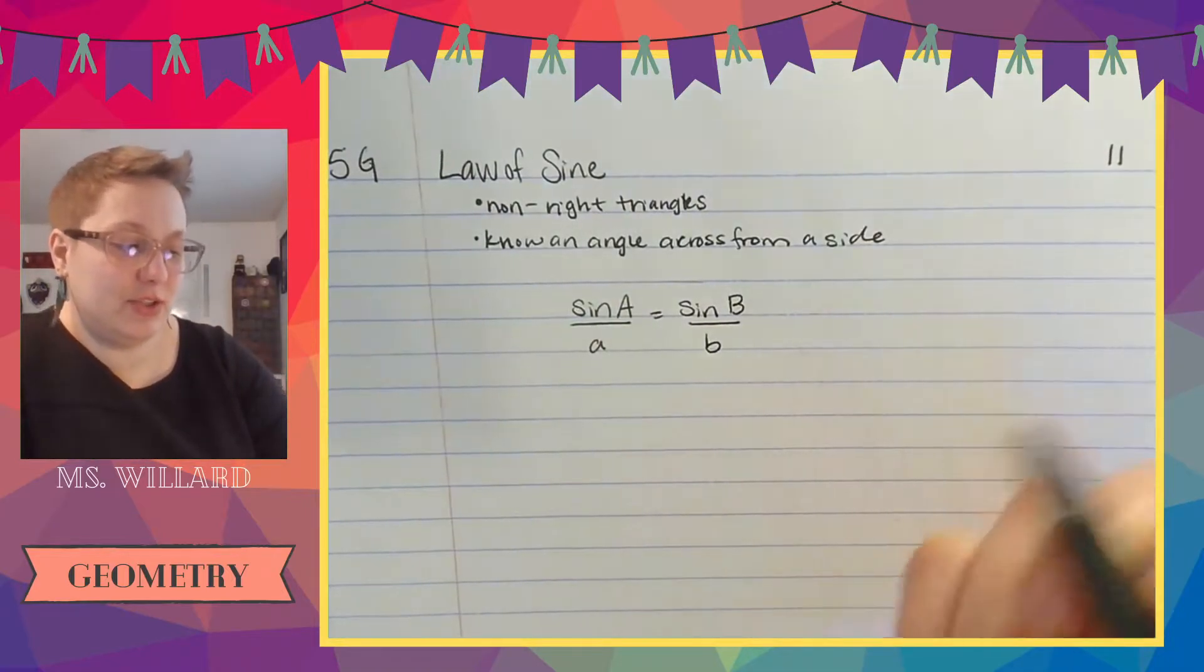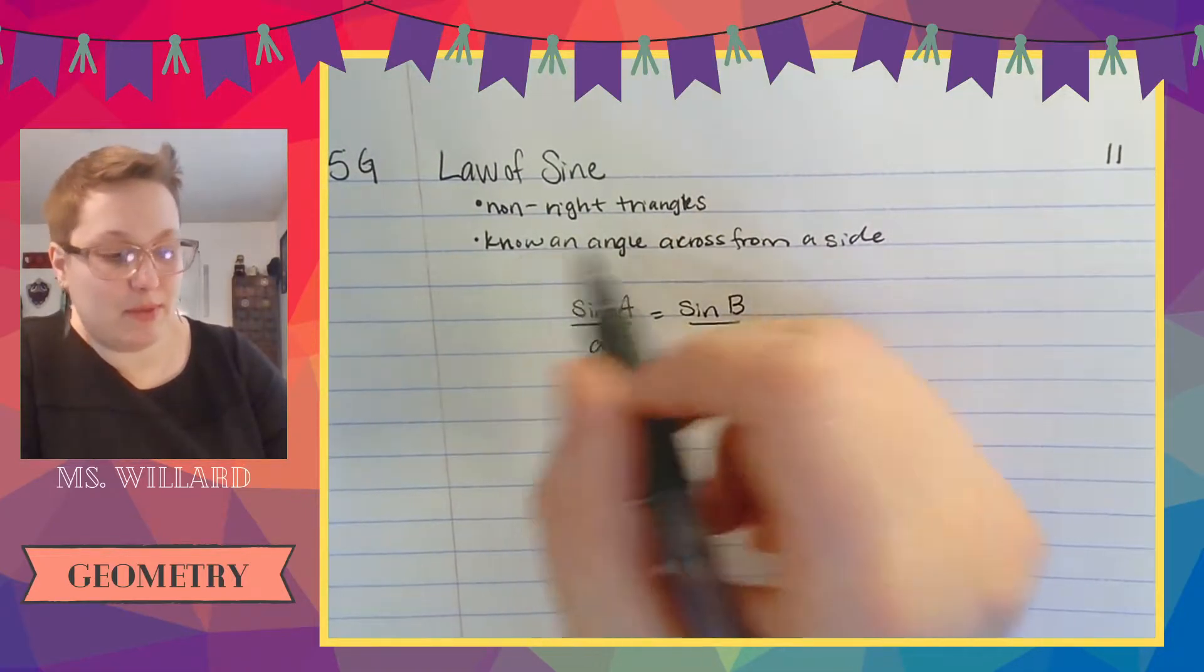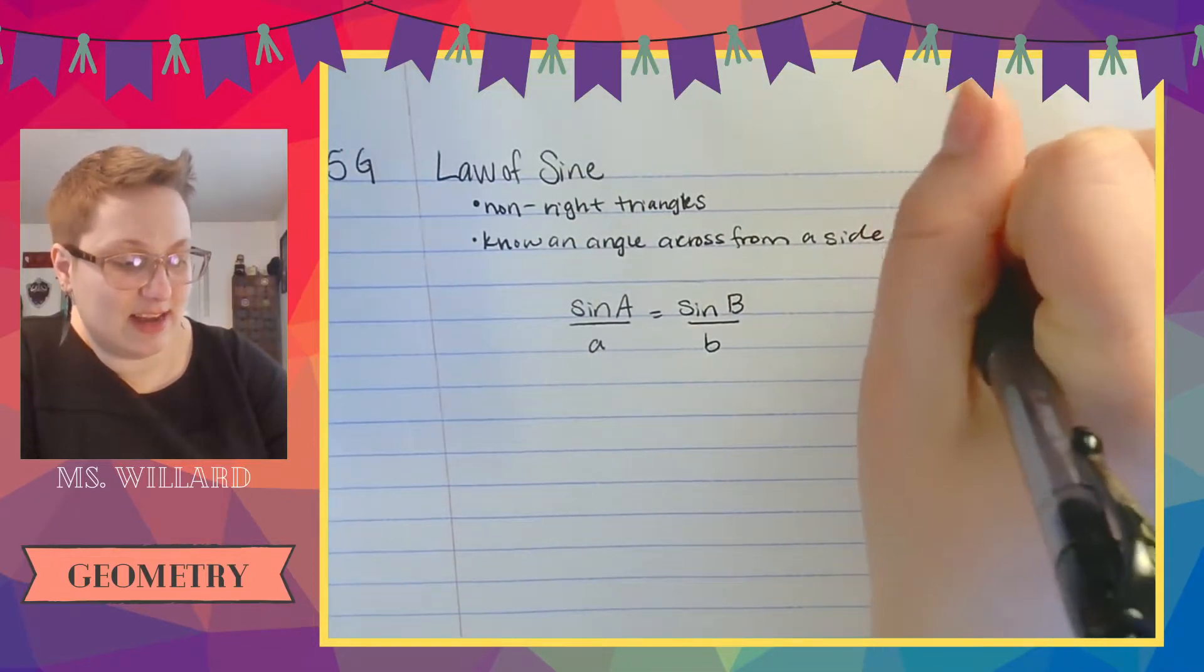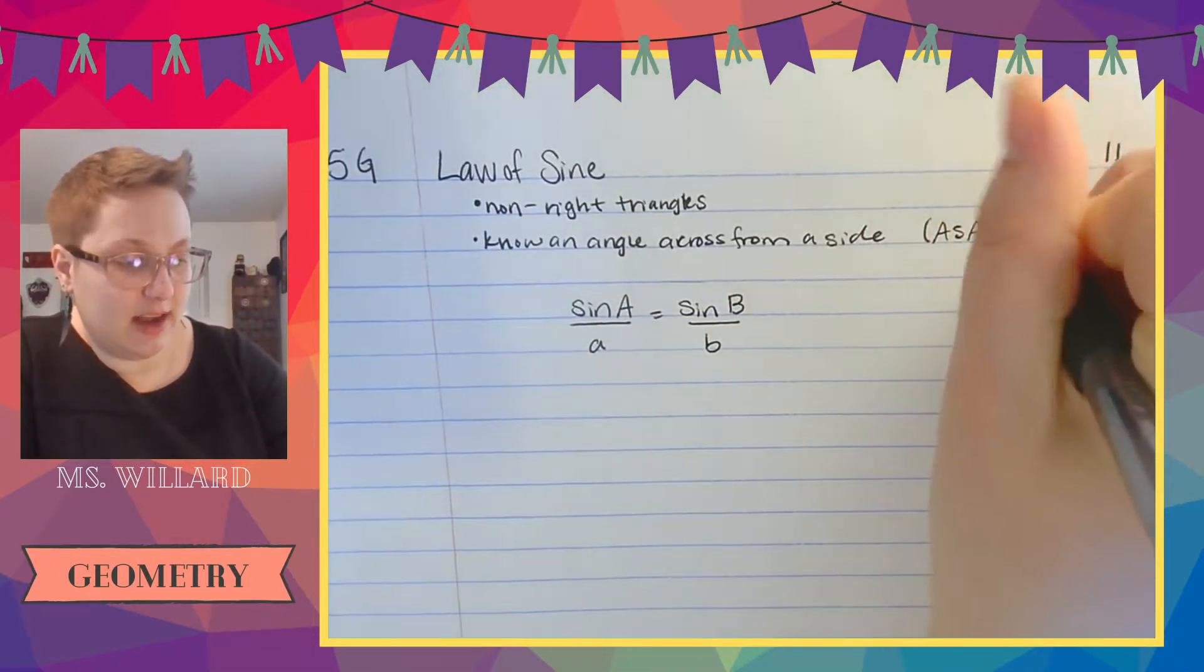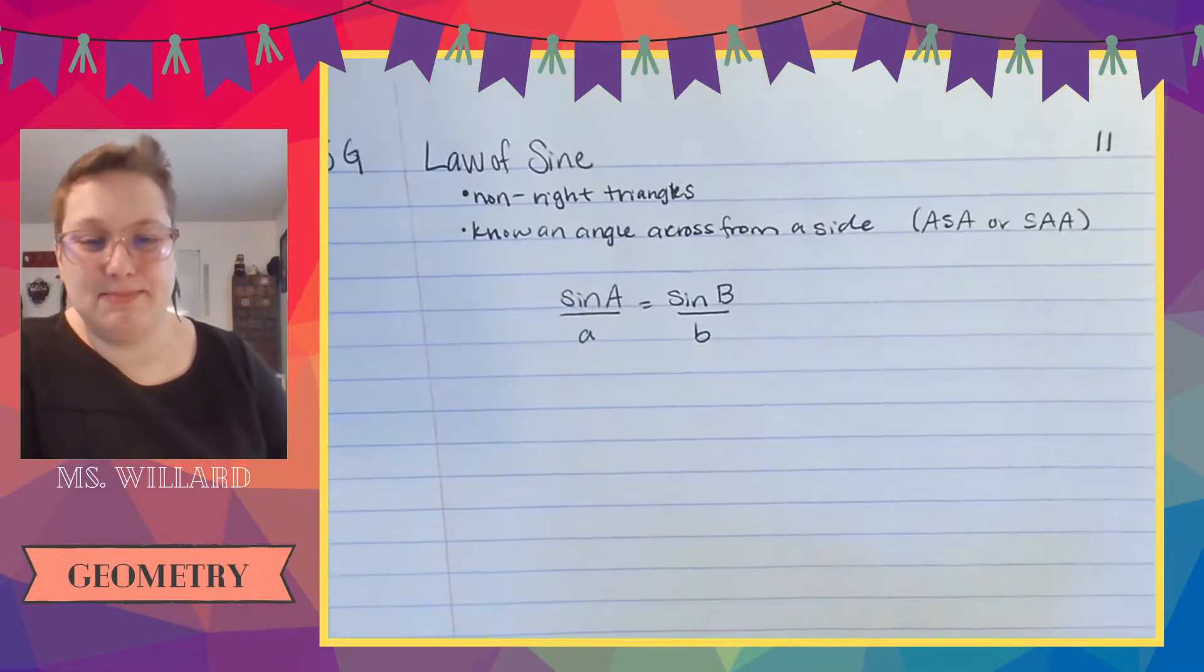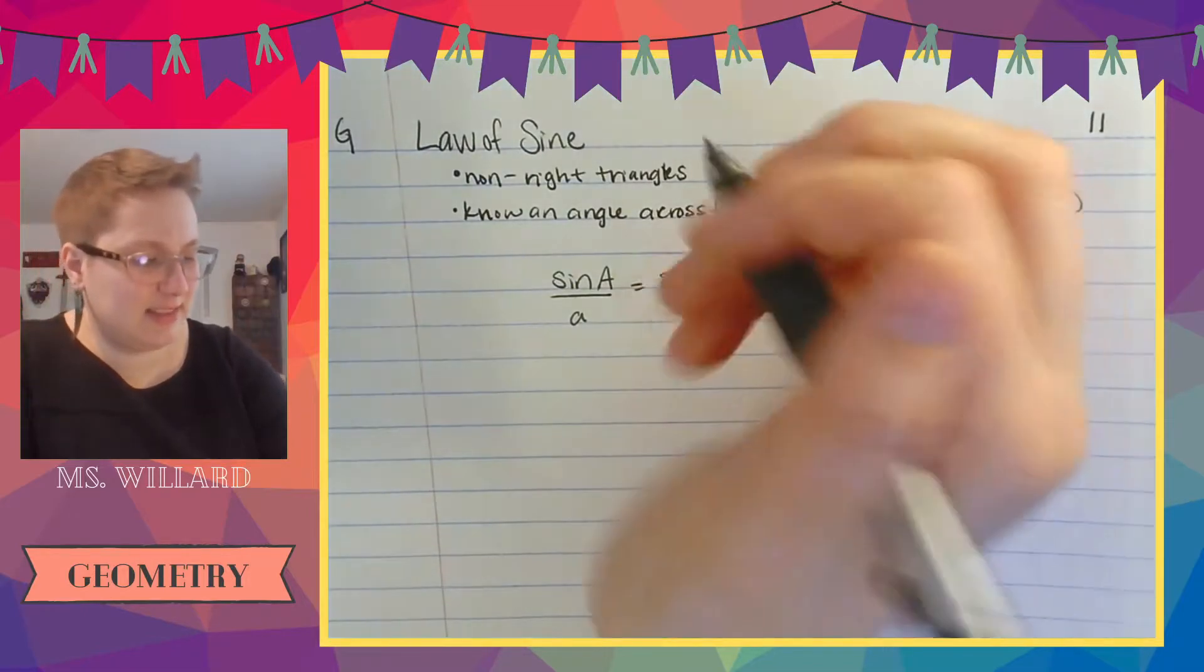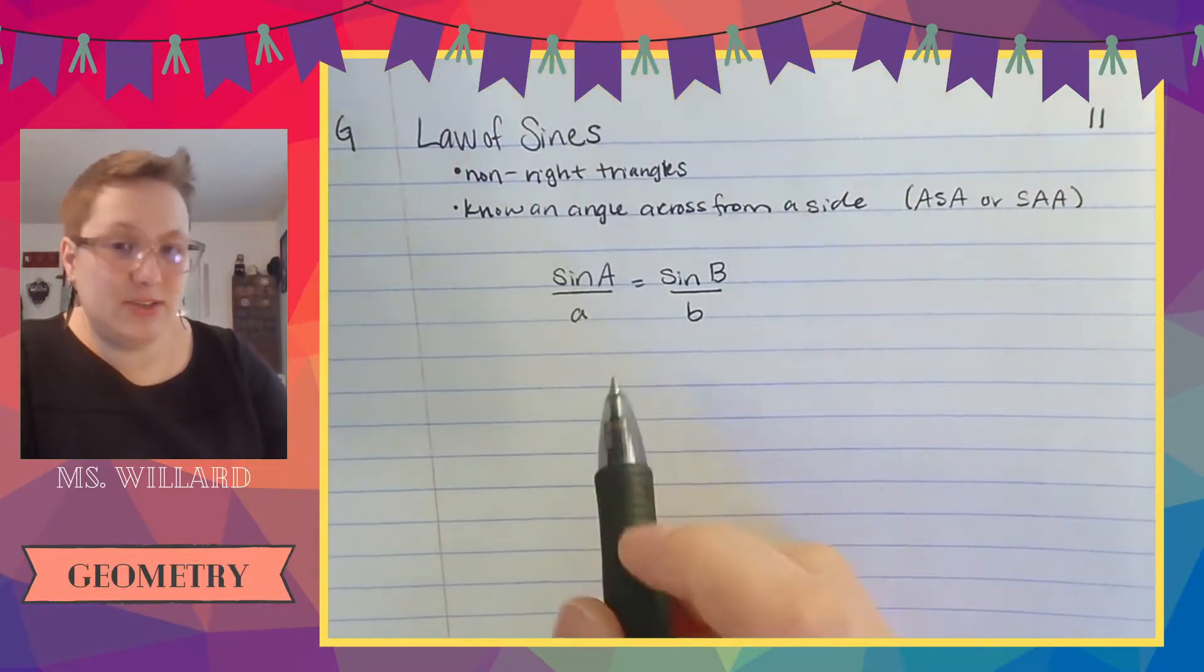Law of sines are used for non-right triangles and it's usually when we know, actually it's going to be when we know an angle across from a side or if you're looking at a triangle that's like an angle side angle or side angle angle triangle then we'll use law of sines. The law of sines. Okay so here's what law of sines is.